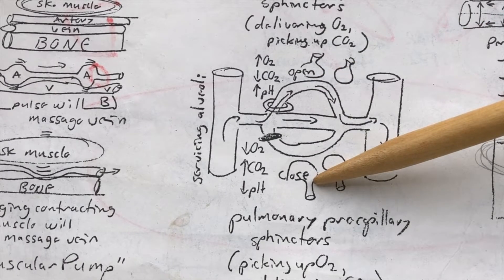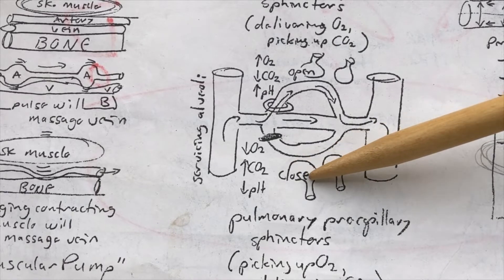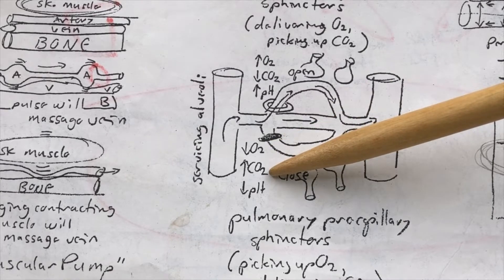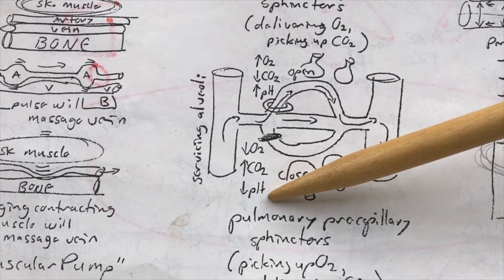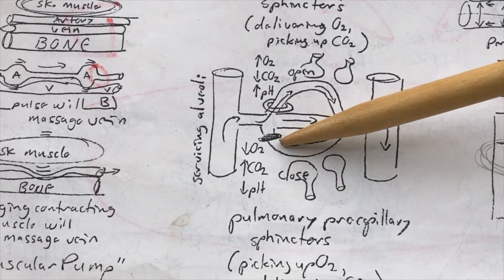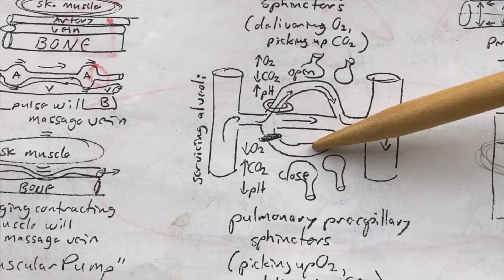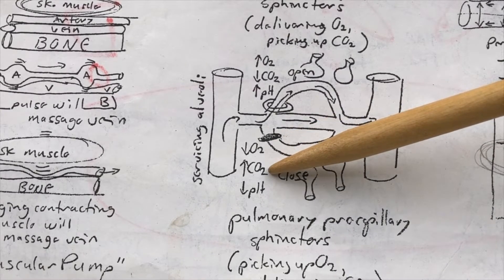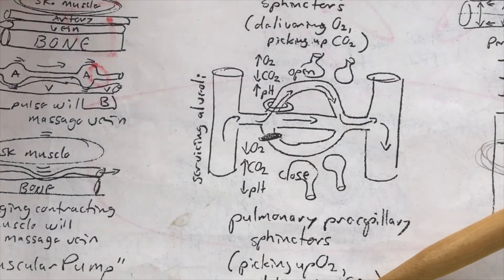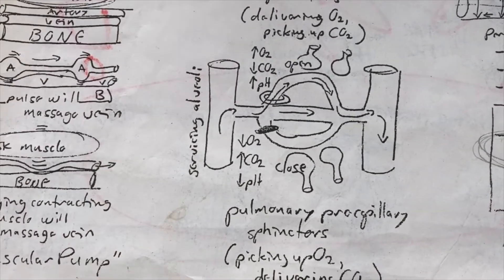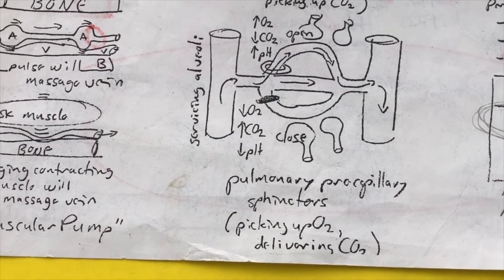In those regions of the lung where there is poor ventilation, where there is stale air in the alveoli, the oxygen content will be low, carbon dioxide level will be high, the pH will be low, the area is acidic. Therefore, these are the conditions that say that the pulmonary pre-capillary sphincter should close, because there's no reason to push the blood through an area where there's nothing to pick up, and no place to throw the garbage. So, the pulmonary pre-capillary sphincters are for picking up oxygen and delivering the CO2.